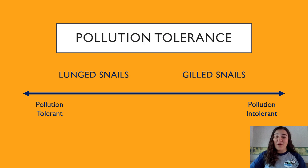The reason why we care about the difference between lunged and gilled snails is that they have different pollution tolerances. While lunged snails can live in more polluted water due to the fact that they can breathe air, gilled snails need clean water to survive, which is why they are indicator species. If we find gilled snails in a stream, it is an indication that we have found a healthy stream.